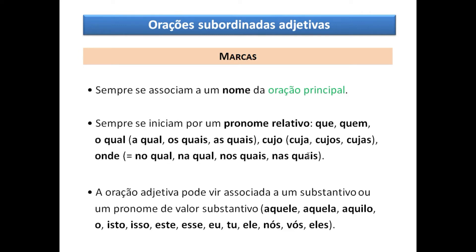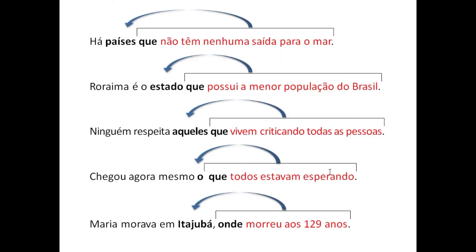A oração adjetiva pode vir associada a um substantivo ou pronome de valor substantivo: aquele, aquela, aquilo, o mesmo, isto, este, esse, eu, tu, ele, nós, vós, eles. Exemplos: 'Há países que não têm nenhuma saída para o mar.' 'Roraima é o estado que possui a menor população do Brasil.' 'Ninguém respeita aqueles que vivem criticando todas as pessoas.' 'Chegou a hora que todos estavam esperando.' 'Maria morava em Tajubá, onde morreu aos 129 anos.'